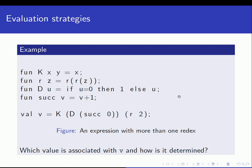We were talking about evaluation strategies, and there are different evaluation strategies applied in functional languages. To introduce the concept, let's imagine this example. We have four definitions of functions. We have function k with two arguments x and y, and the result is x. We have function r with argument z, and it returns r of r of z.